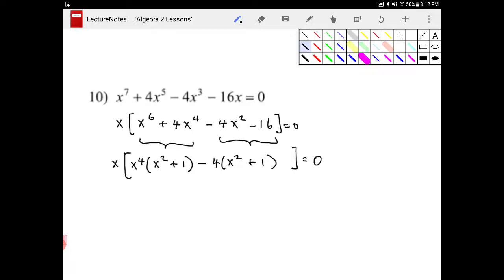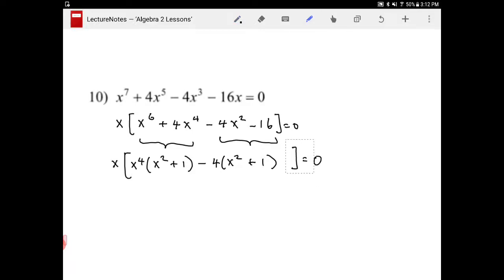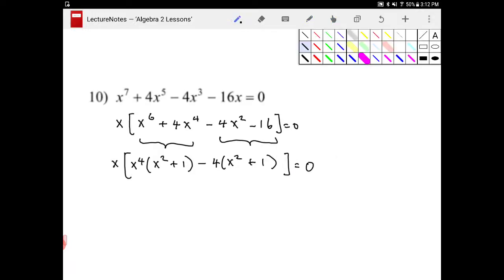And the right half becomes minus four x squared plus one. And from here, it's rather clear that the common factor of this entire expression is x squared plus one. So I can factor further.